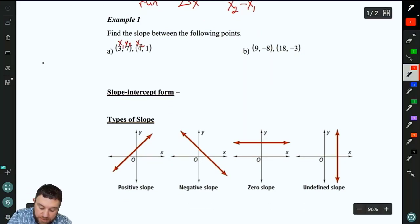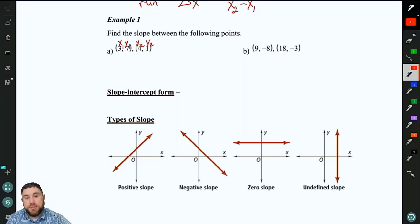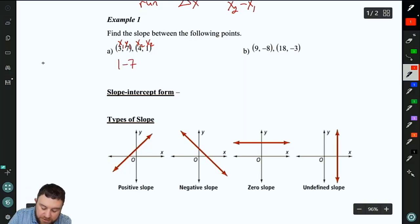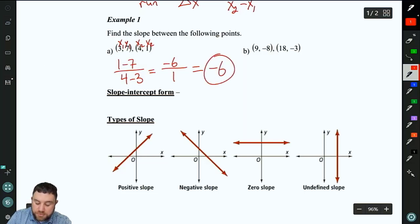I like to label my points. So x1, y1, x2, y2. Remember it's always x, y paired together, and then the ones are in one order paired. The twos are in another. So here we have 1 minus 7 over 4 minus 3. 1 minus 7 is negative 6. 4 minus 3 is 1. Anytime it's over 1, reduce that to get rid of the 1 on the bottom. So this becomes just negative 6.